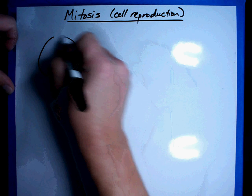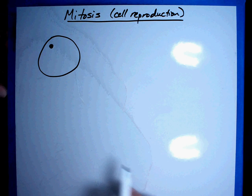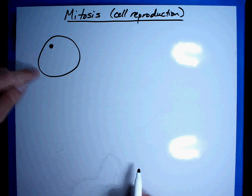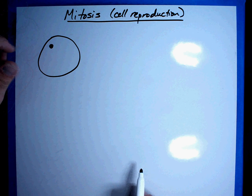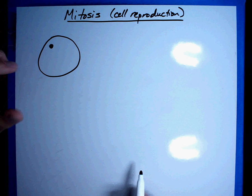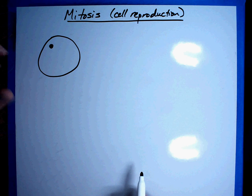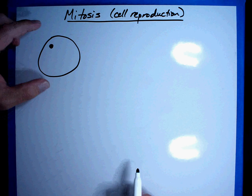Here's a normal cell. Now, all I'm going to do is draw the cell membrane and the nucleus. All the parts are inside, the mitochondria, the Golgi apparatus, the endoplasmic reticulum, all those things are there. I'm just not going to draw them at this point.